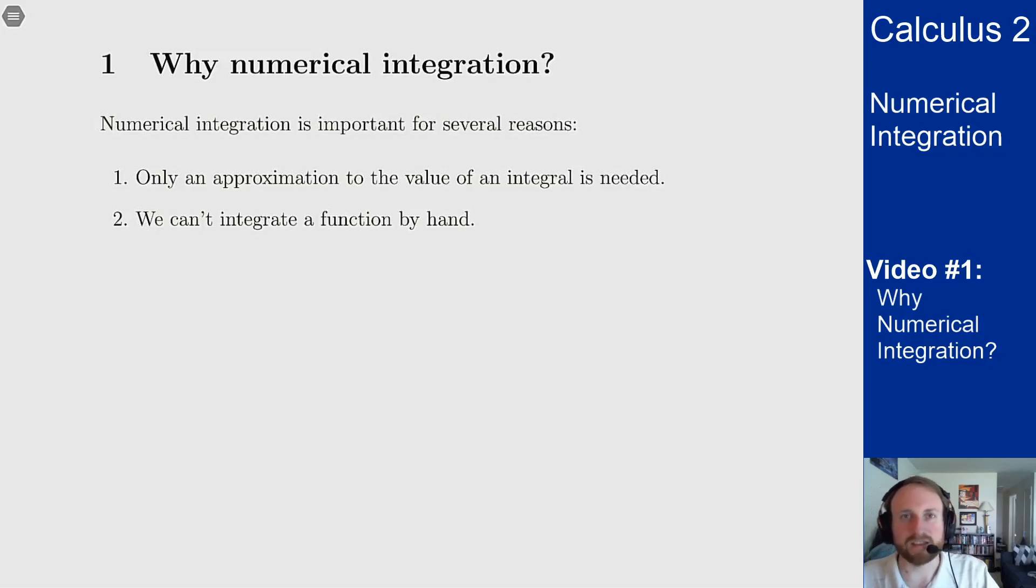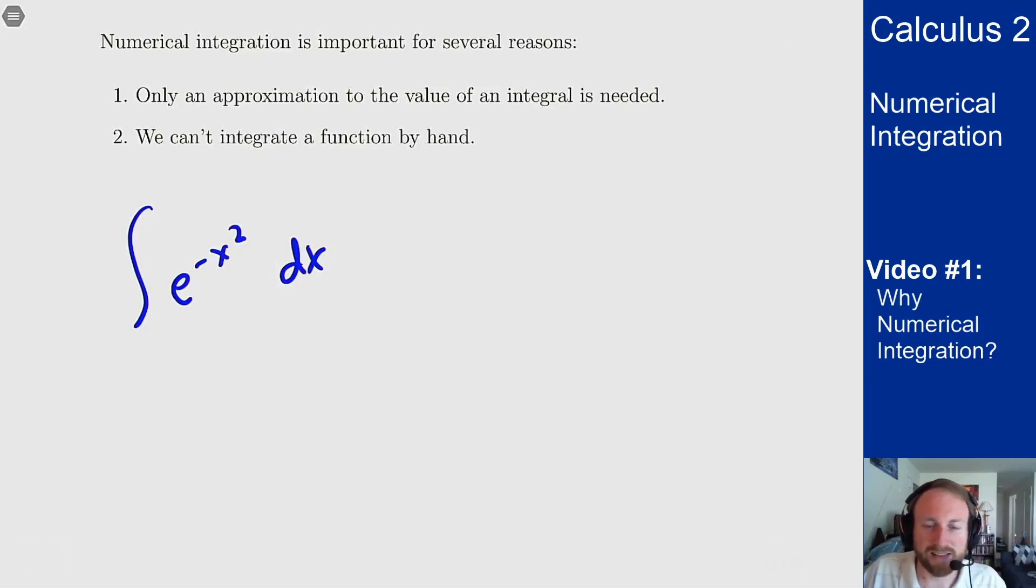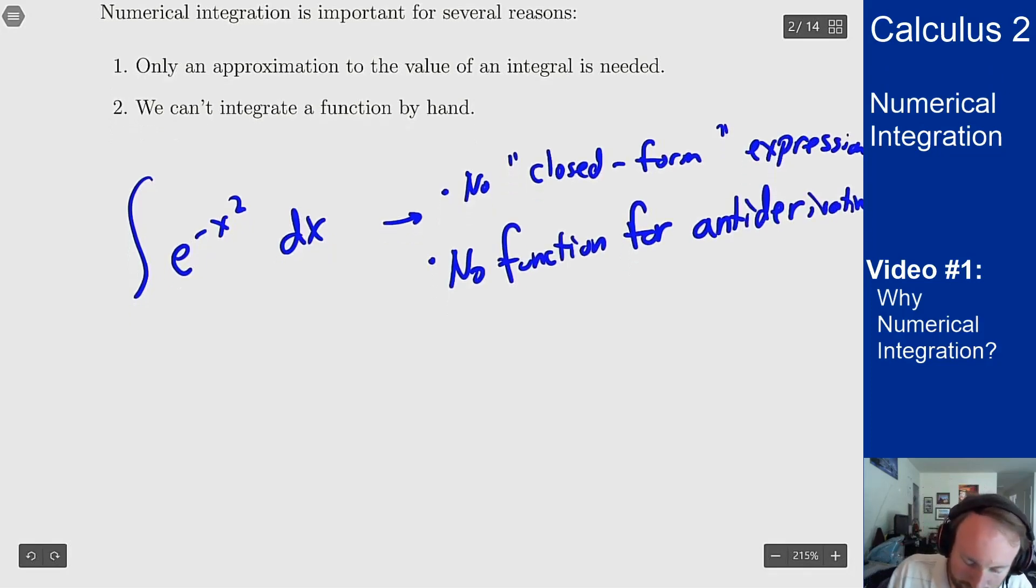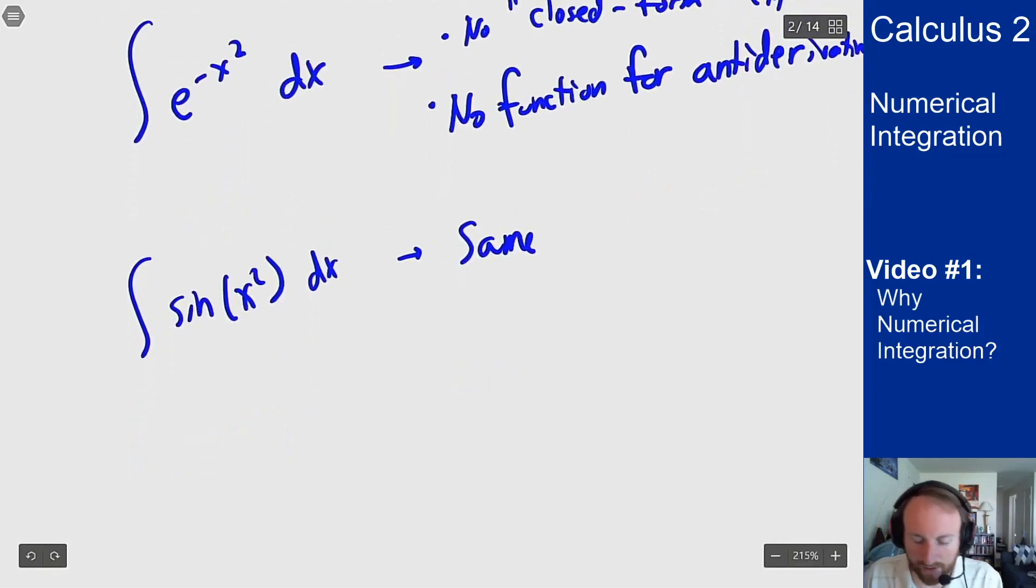The second main way this is really useful and important is because there are a lot of functions that we can't actually integrate by hand. We don't have a formula for these functions. Things like integral of e to the minus x squared dx, that's a function that has what's called no closed form expression. There's no nice function that we get for an antiderivative here. And there are a lot of other functions like this. Things like sine of x squared. Anything that's a weird composition will sometimes fall in this category because we don't have a nice rule for integrating compositions and so this can cause us problems.